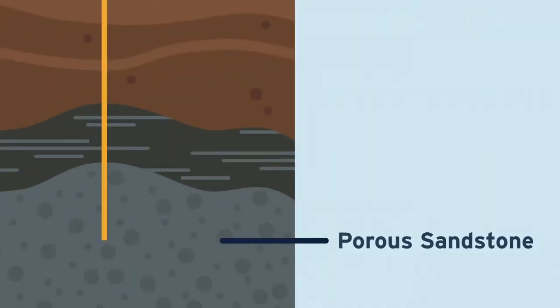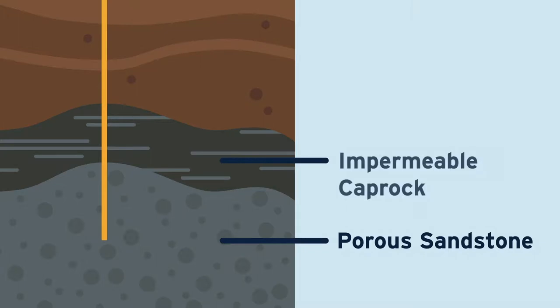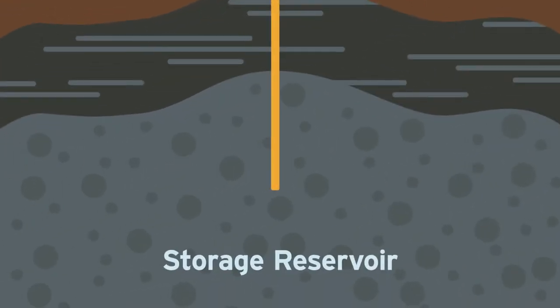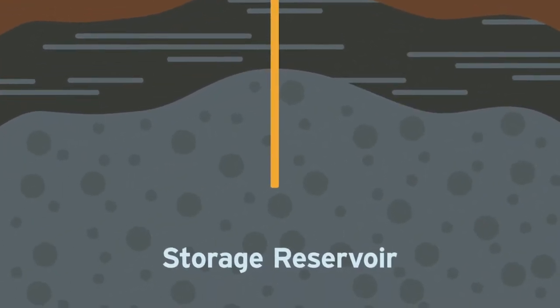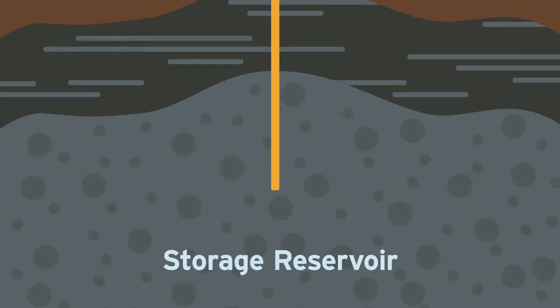Natural gas is stored deep underground inside porous sandstone beneath a layer of impermeable cap rock, creating a safe and natural storage reservoir. These reservoirs once naturally held gas and oil securely for millions and millions of years through countless earthquakes and other natural events.